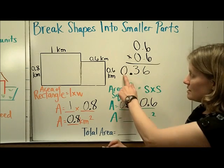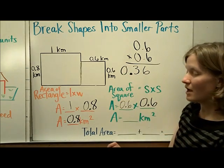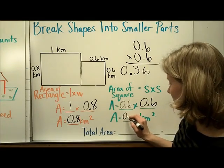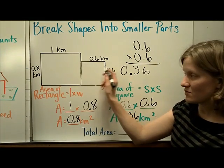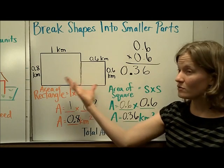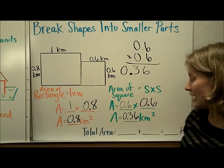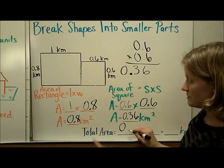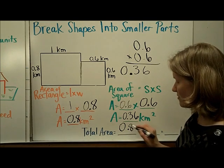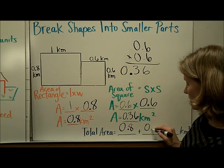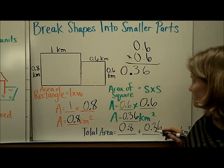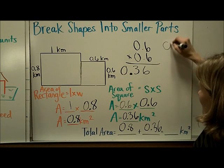So this is 0.36 kilometers squared, which is the area of this square. So in order to find the total area of this polygon, I just need to add them together. I'm going to take 0.8 kilometers squared plus 0.36 kilometers squared, and I'm going to rewrite those vertically.